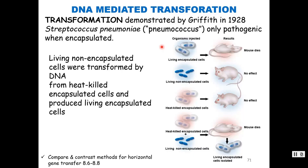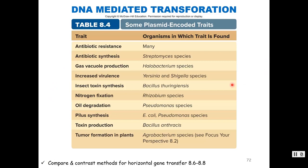Transformation was discovered by Frederick Griffith in 1928. He knew encapsulated Streptococcus pneumoniae was virulent and killed mice, while a non-encapsulated strain let the mouse live. Heat-killed encapsulated cells wouldn't kill mice. But mixing heat-killed encapsulated cells with living non-encapsulated cells allowed the non-encapsulated bacteria to pick up the capsule gene — producing encapsulated cells that killed the mouse. He discovered transformation. Things that can be picked up through transformation include antibiotic resistance, antibiotic synthesis — since some bacteria make antibiotics — and virulence factors.